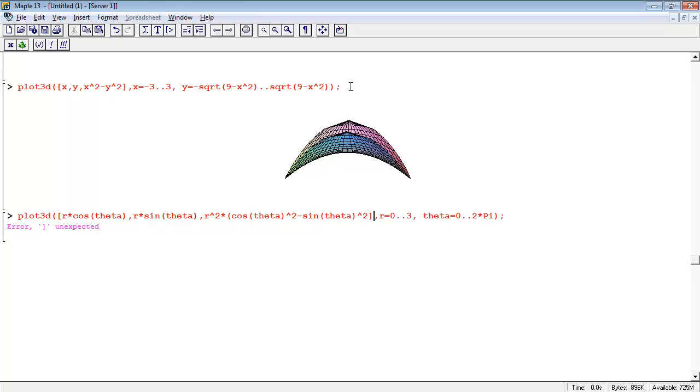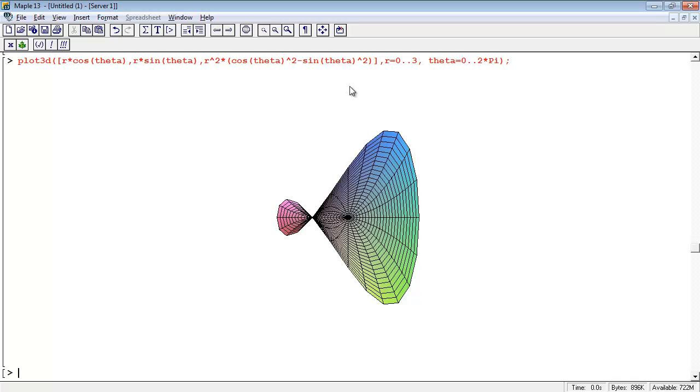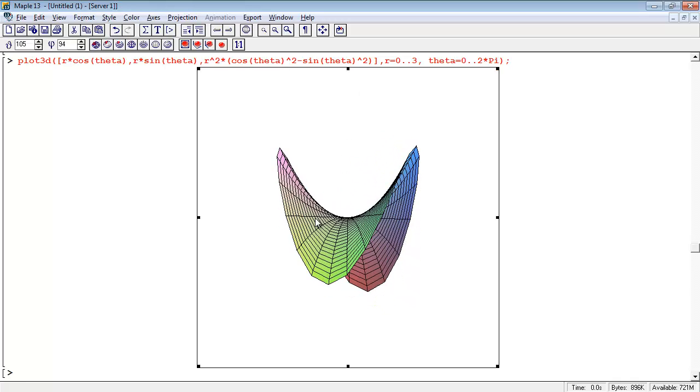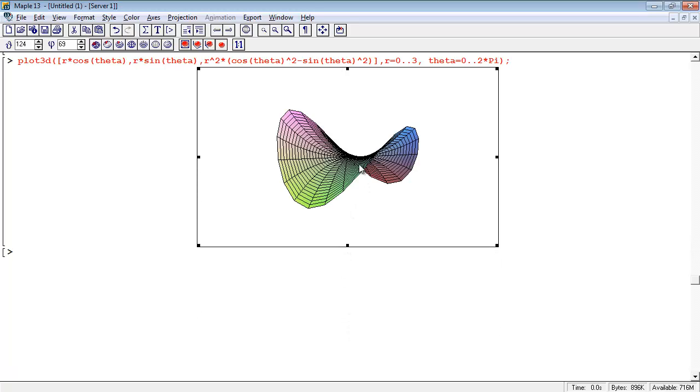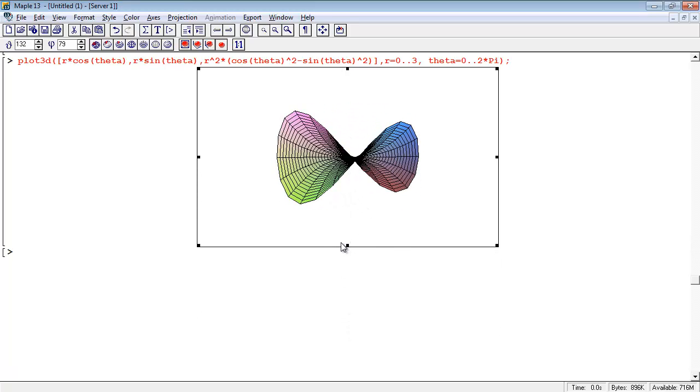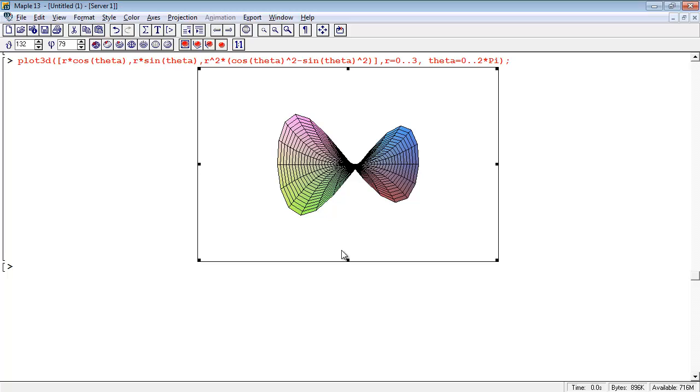Missing something again. Got our list of equations. Cosine squared, I forgot to close the parentheses right there. And again, we get our hyperbolic paraboloid. If I smash it, it'll look the same, right? Pull it this way.